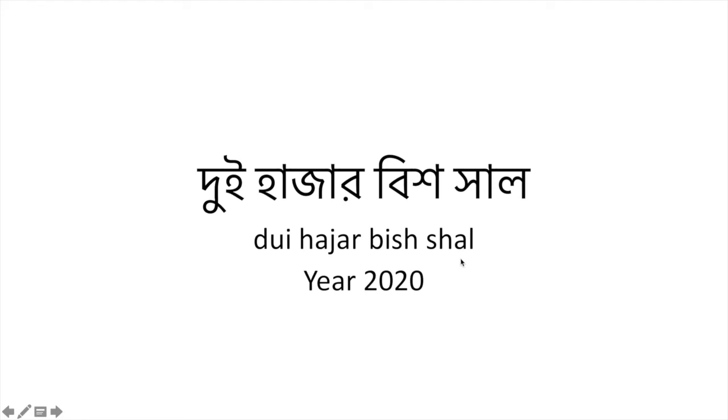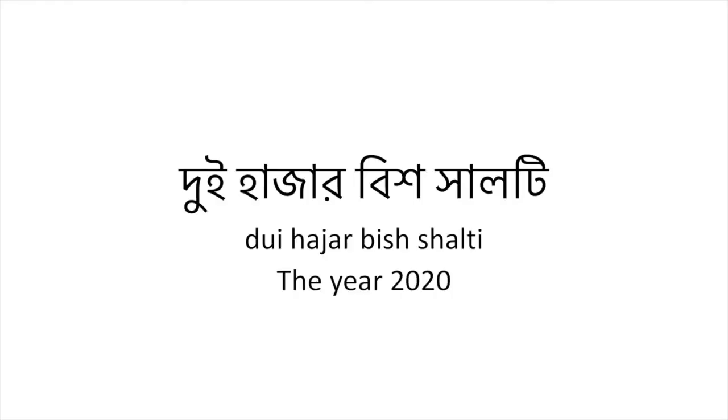Year 2020 is 'dui hajar bish shal' — easy, right? But if you want to be more specific, if you want to say 'the year 2020,' you add 'ti' at the end of 'shal,' making it 'dui hajar bish shal ti.' So 'dui hajar bish shal ti' means 'the year 2020.' Simple as that.